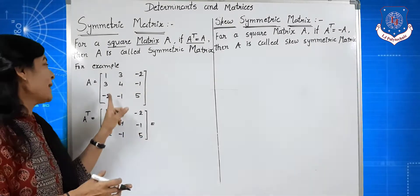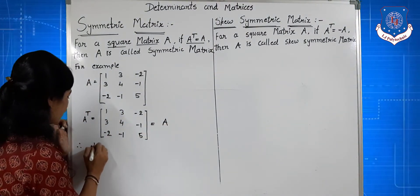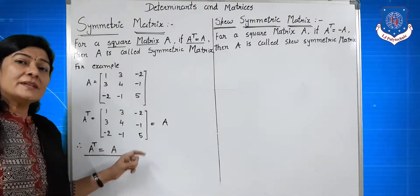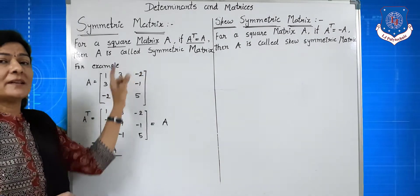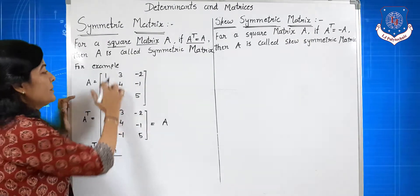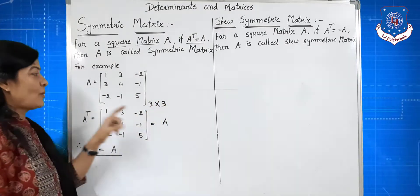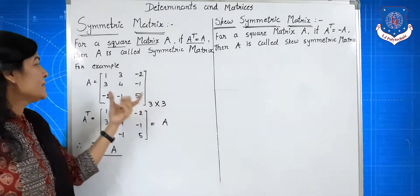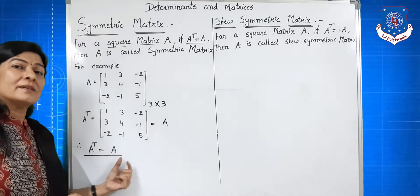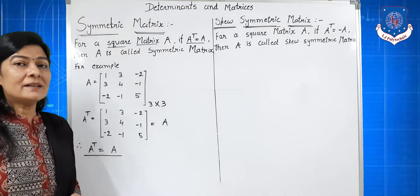This resulting matrix — 1, 3, minus 2; 3, 4, minus 1; minus 2, minus 1, 5 — is equal to the given matrix A. So A transpose equals A. This matrix has 3 rows and 3 columns, so its order is 3 by 3. It is a square matrix, and since A transpose equals A, this matrix A is called a symmetric matrix.